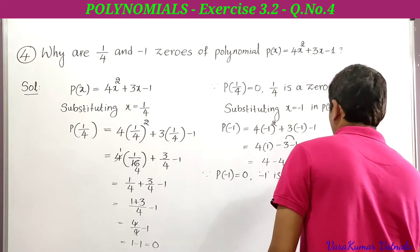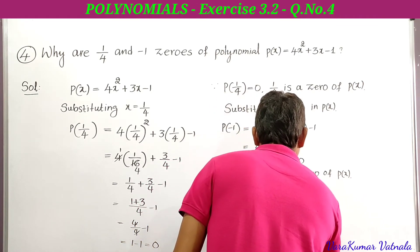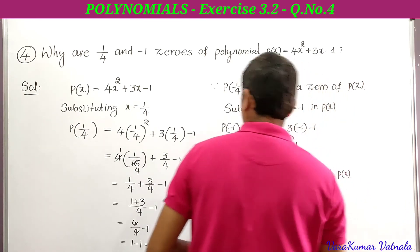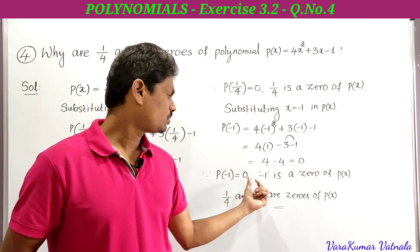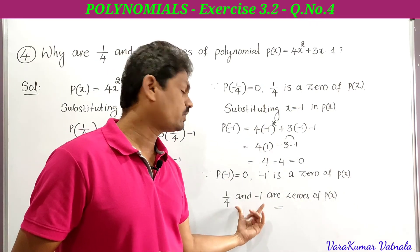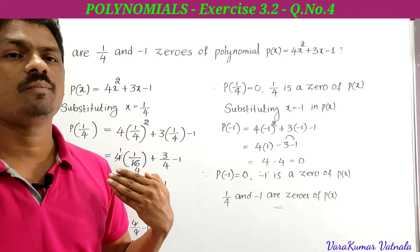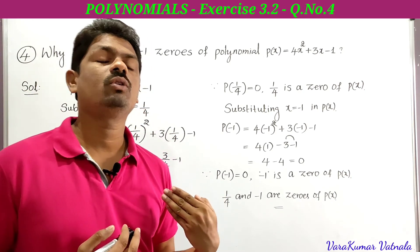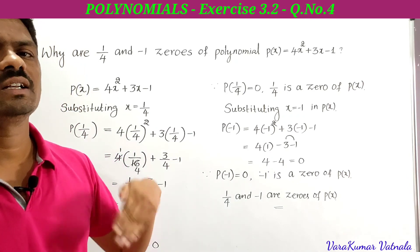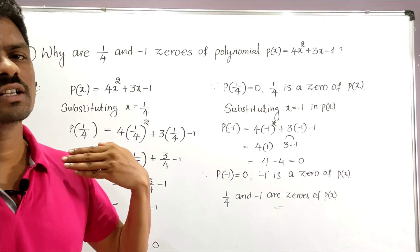Therefore we can write: 1/4 and -1 are zeros of p(x). This is the 4th problem in exercise 3.2. We have now completed all the problems in 3.2, including the introduction and graphical representation of polynomials. In the next class, we will learn the relation between the coefficients and the zeros of polynomials. That's all for today's class — thanks for watching.